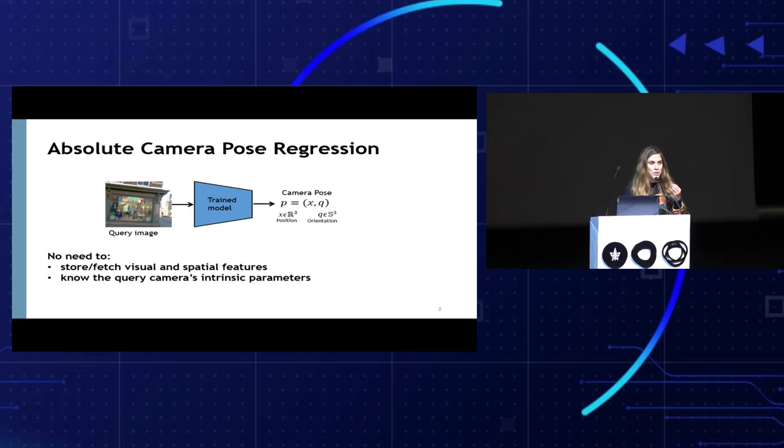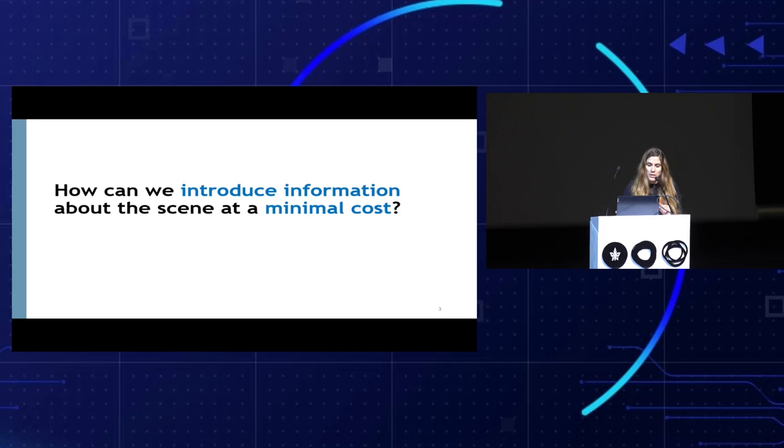Absolute Camera Pose Regression aims to regress the camera pose parameters — X the position and Q the orientation — directly from the query image. This is a simple, lightweight, fast scheme. You don't need to store or fetch the visual or spatial features of the scene. You don't need to know the query intrinsics. Just give the query image and you're done.